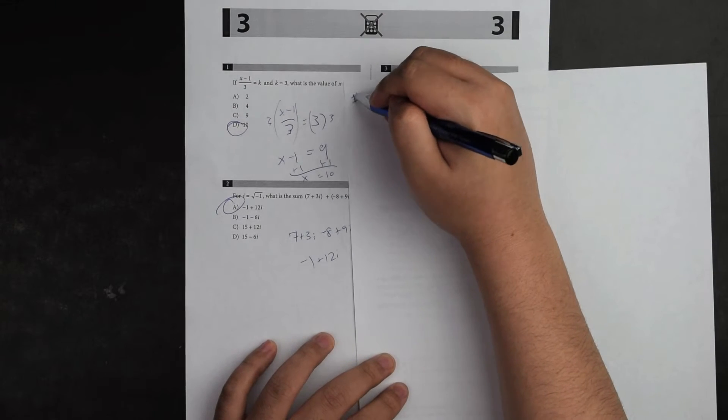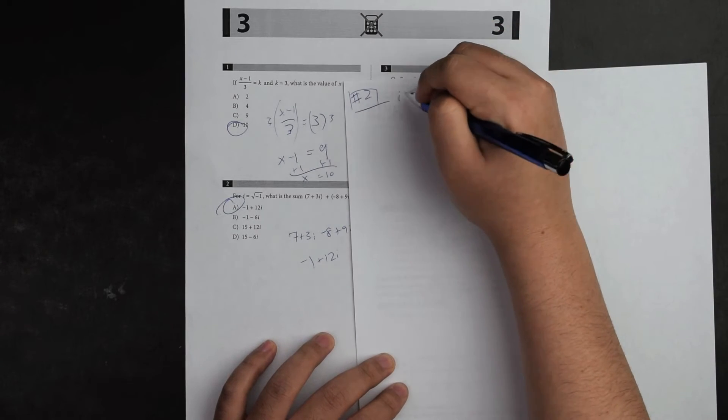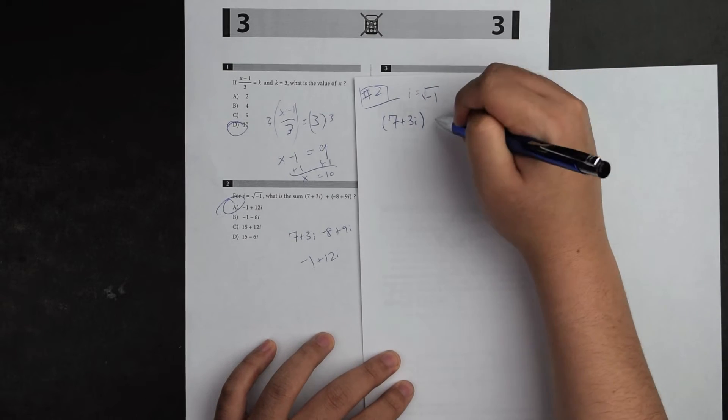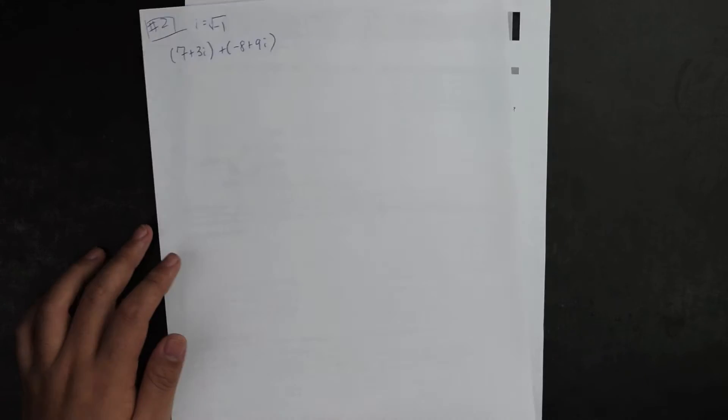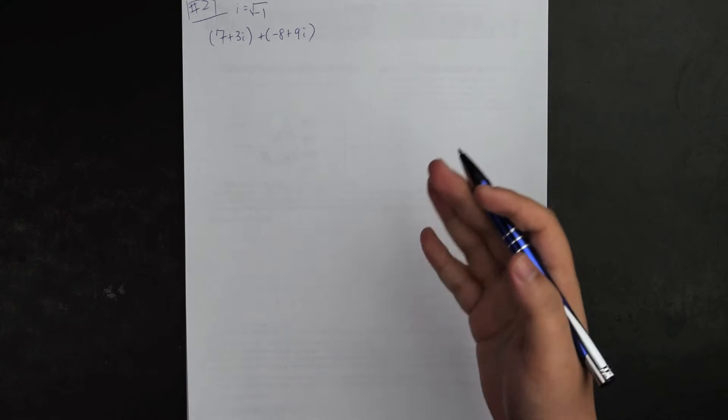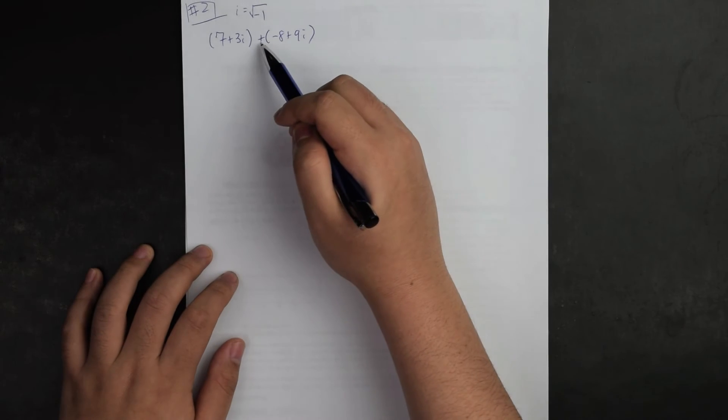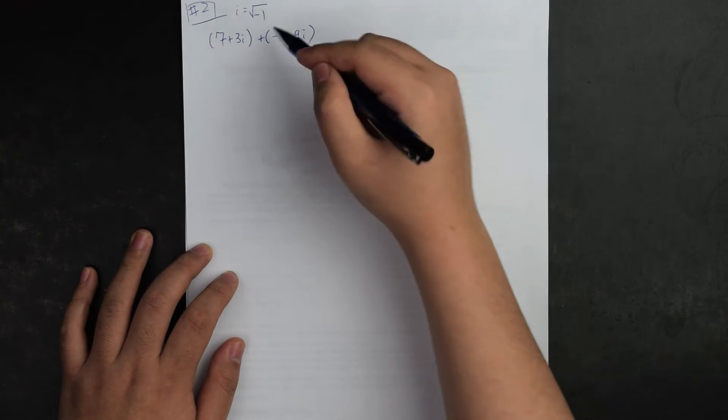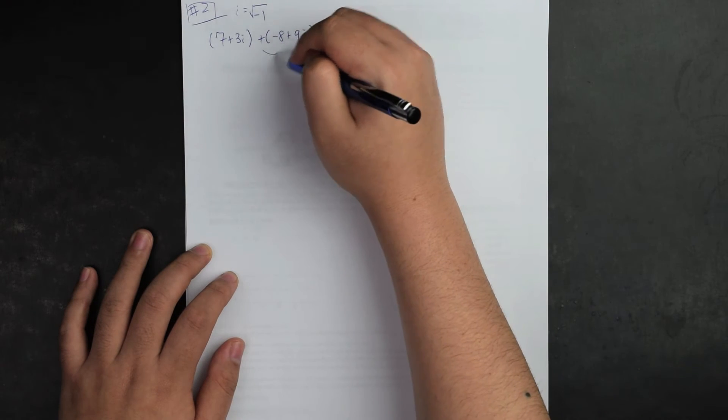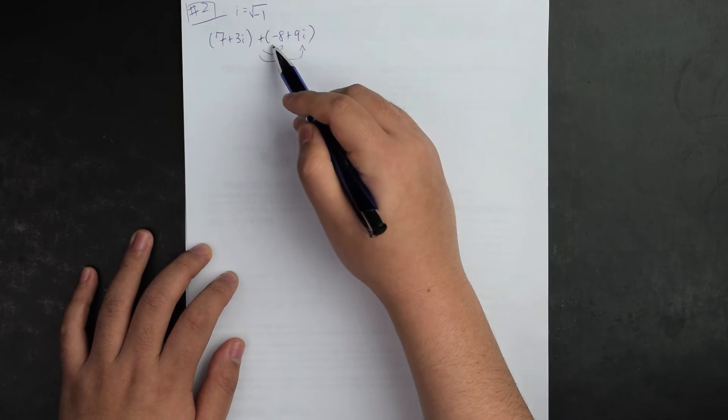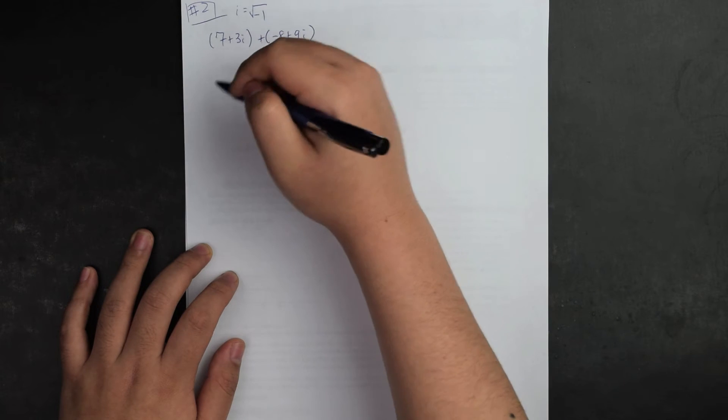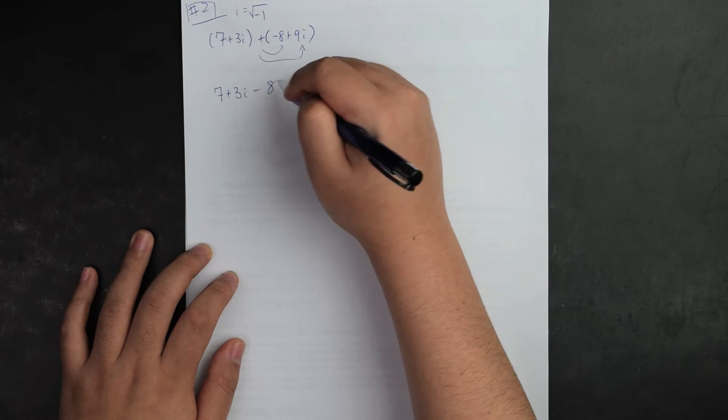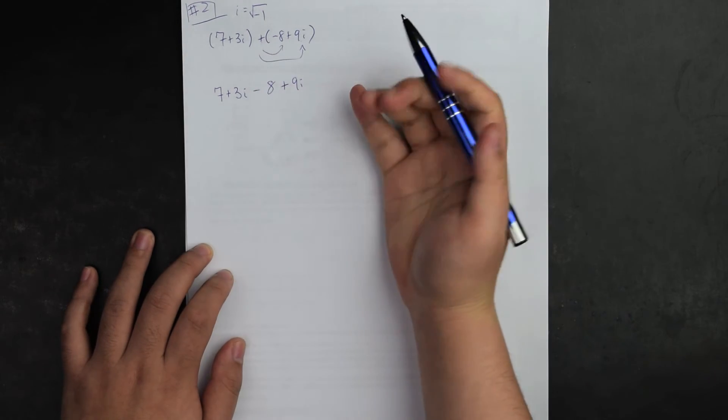For number two, I'm going to copy down the question and break down the key information. The important thing is there's a plus sign here. When I distribute out the plus sign to get rid of parentheses, I realize that plus with a negative stays negative, positive stays positive. The parentheses disappear and this is how the problem looks.